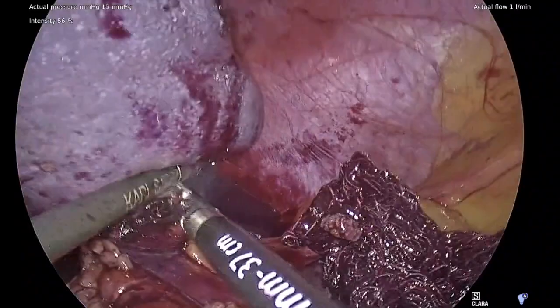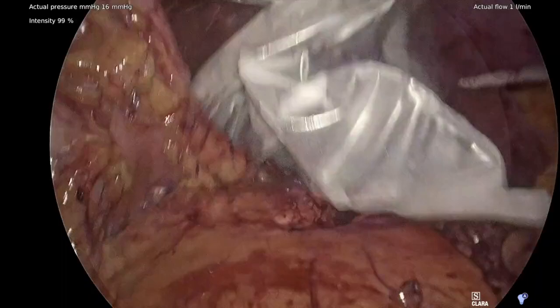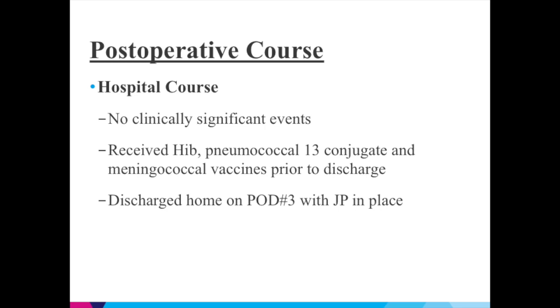The distal pancreas and spleen were placed into two separate endocatch bags and removed from the abdominal cavity. A Jackson Pratt drain was placed within the dissection bed. The patient's hospital course was uneventful and he was discharged home on postoperative day three with the JP drain in place, having received all necessary vaccines.